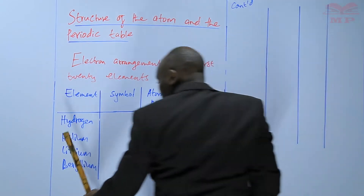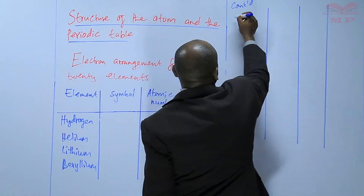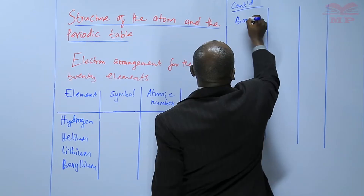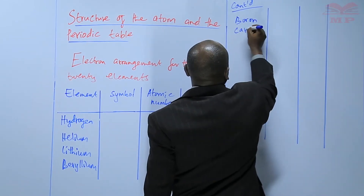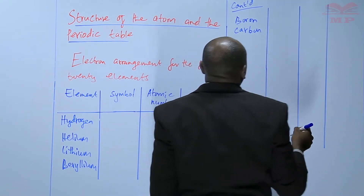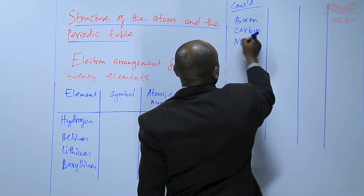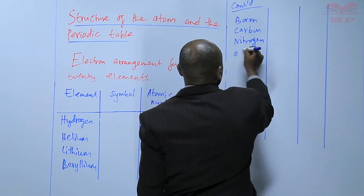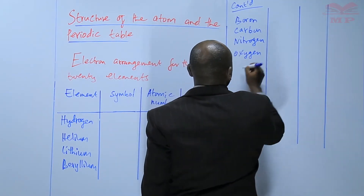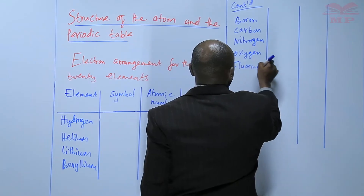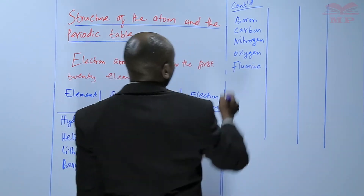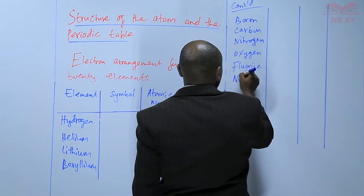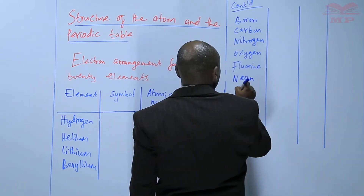From beryllium, we'll go to boron, then carbon, nitrogen, then oxygen, fluorine, neon, sodium.